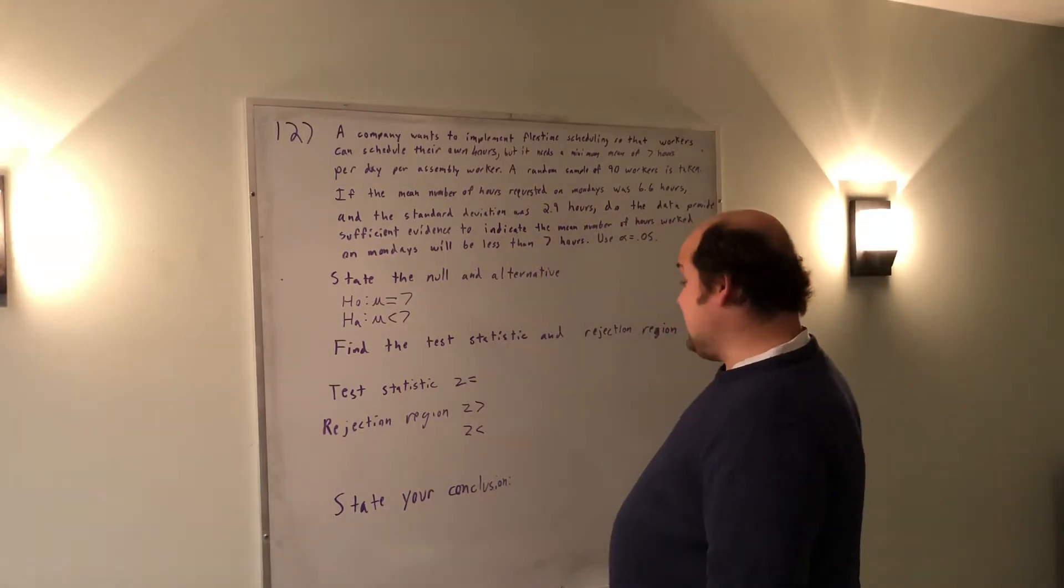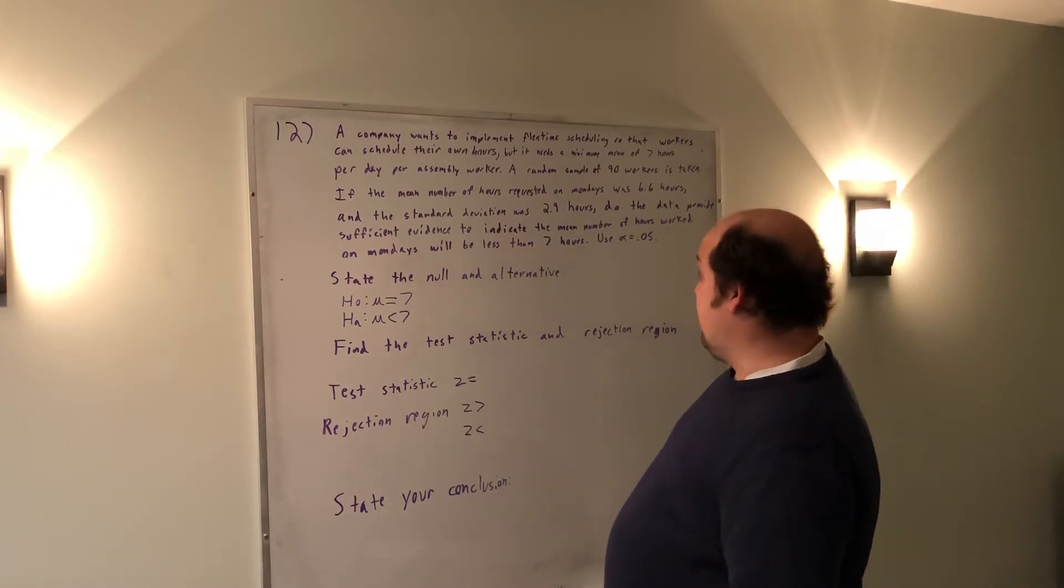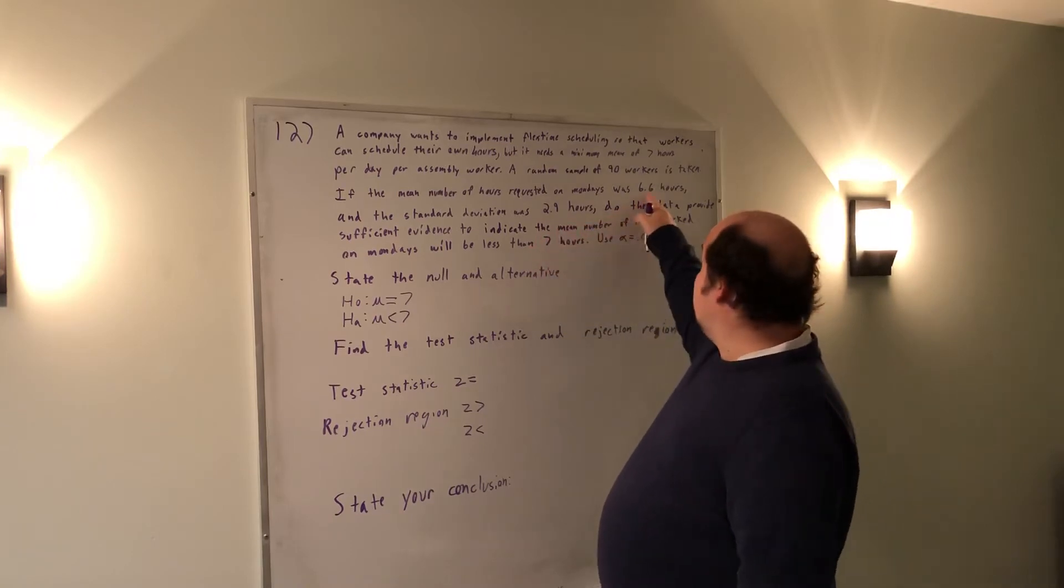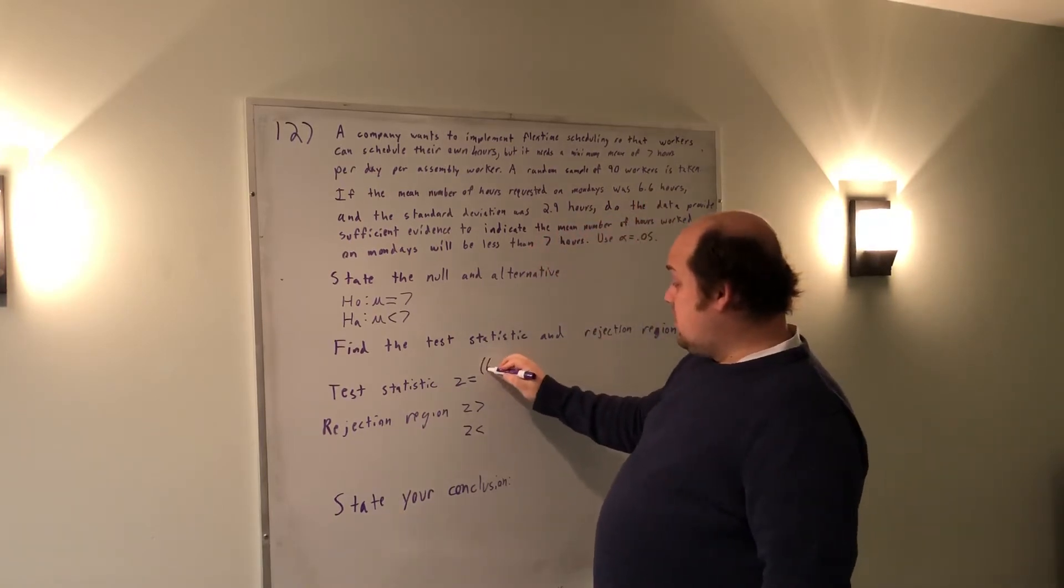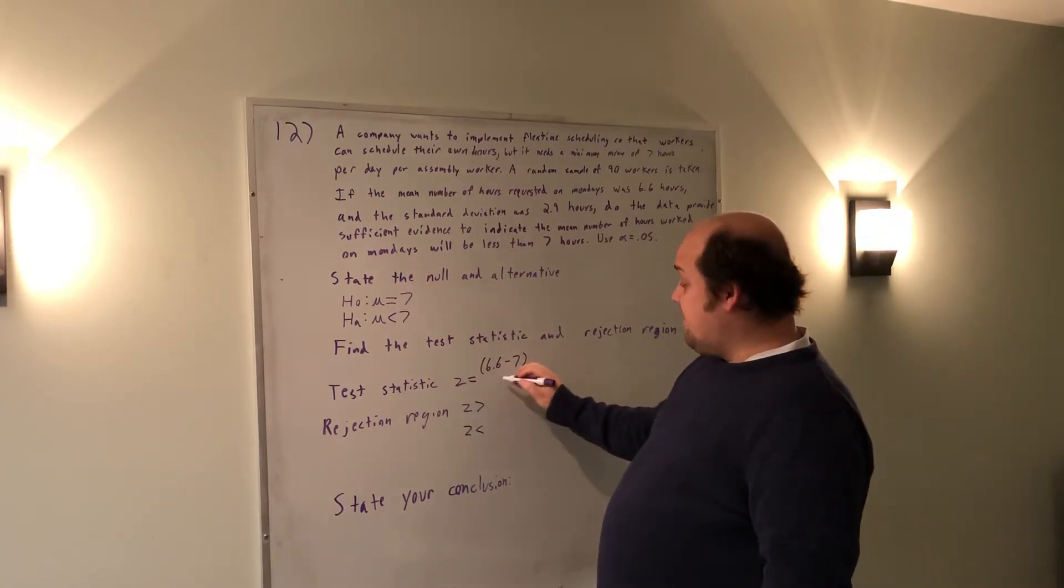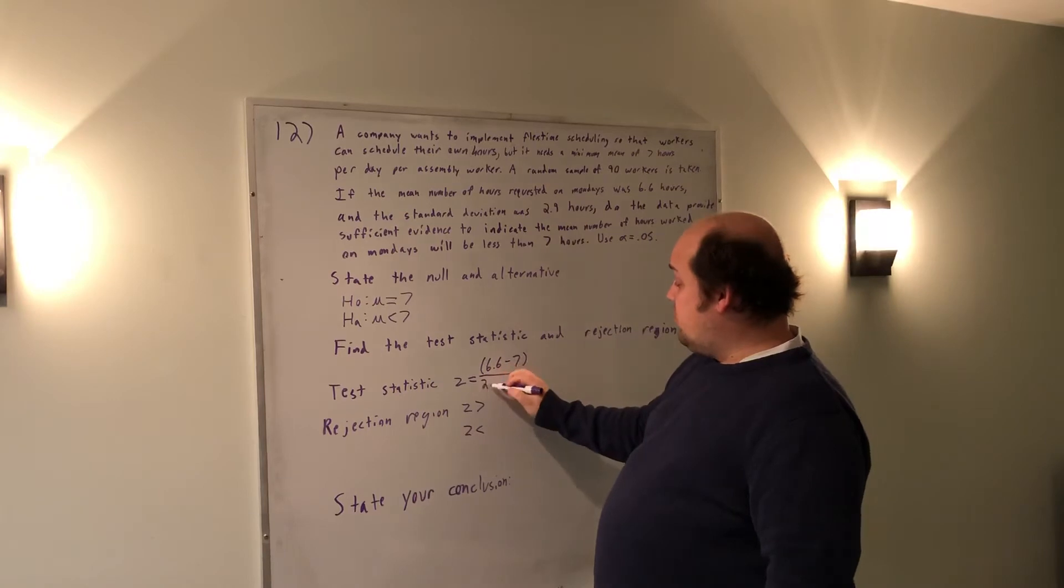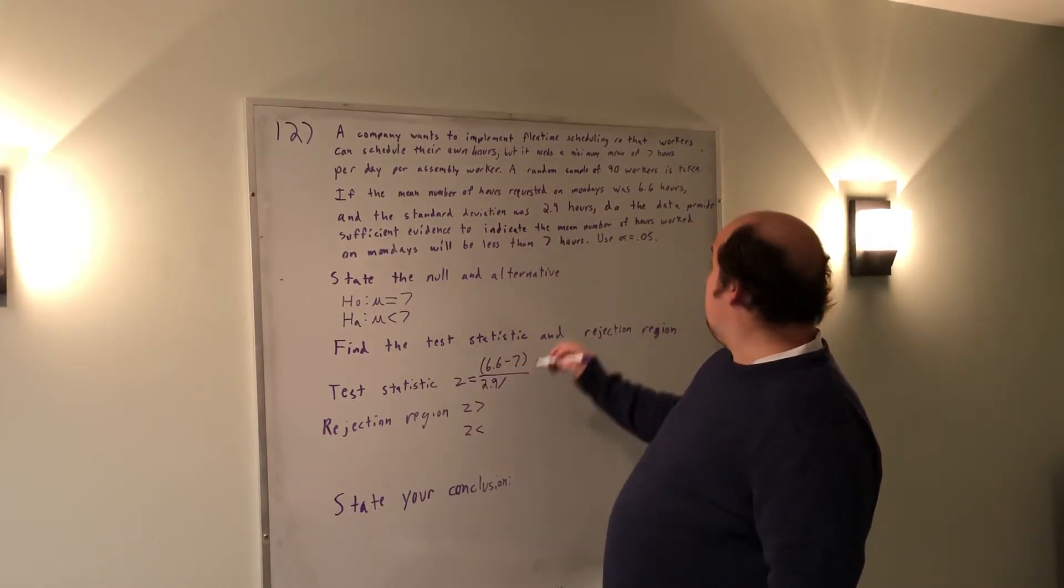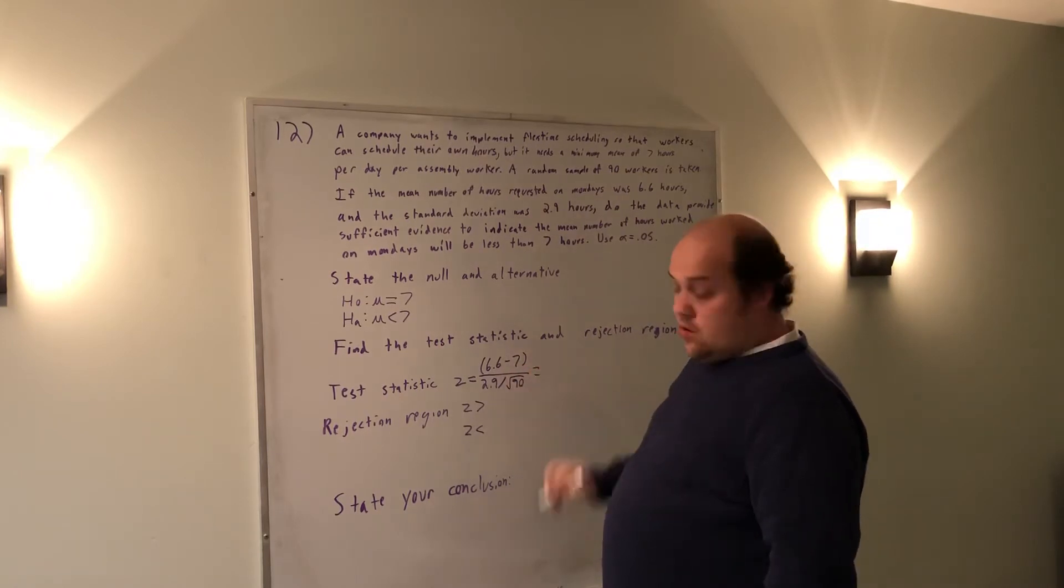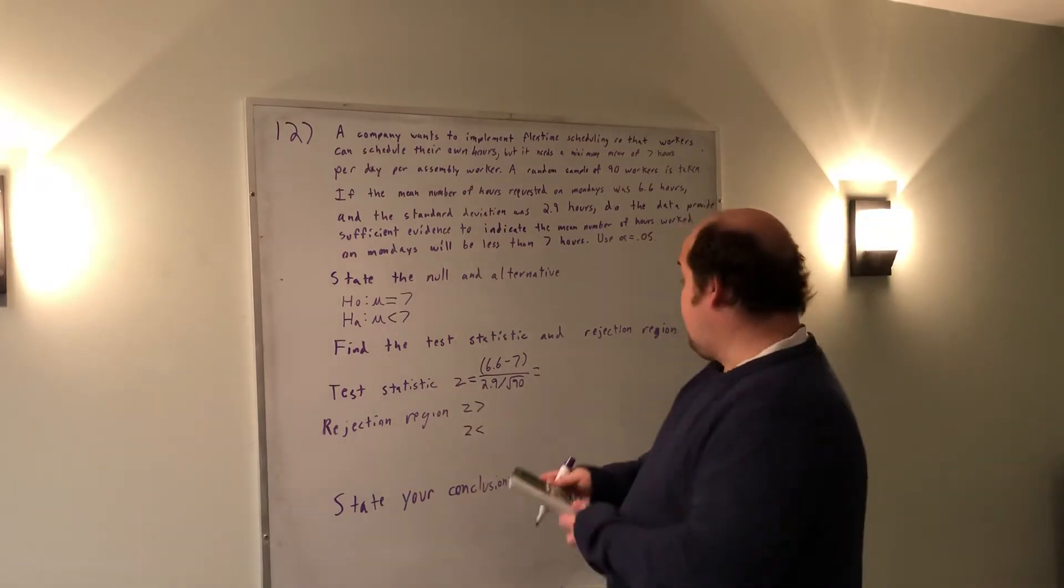Now that we have the null and alternative, we want to find the test statistic. The test statistic z is going to be based off of what we got from the actual sample, which was 6.6 hours, minus the mean under the null hypothesis, which is seven, divided by the given standard deviation, which is 2.9, divided by the root of n, which they told me there were 90 workers involved.